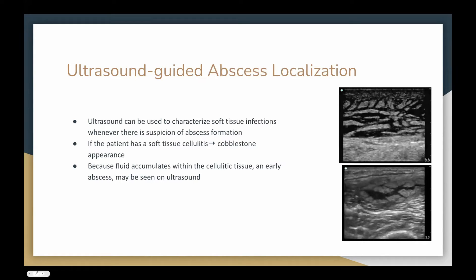Ultrasound-guided abscess localization is useful when a patient has soft tissue infections and you're suspicious of an abscess. On the top photo, a patient with soft tissue cellulitis shows the black fluid going in between the tissue and fascia layers, creating a cobblestone appearance typical for cellulitis. Ultrasound is really good because even with an early abscess, when fluid accumulates in cellulitic tissue, you can see that on ultrasound — and compared to physical exam, ultrasound has a really high sensitivity and specificity.